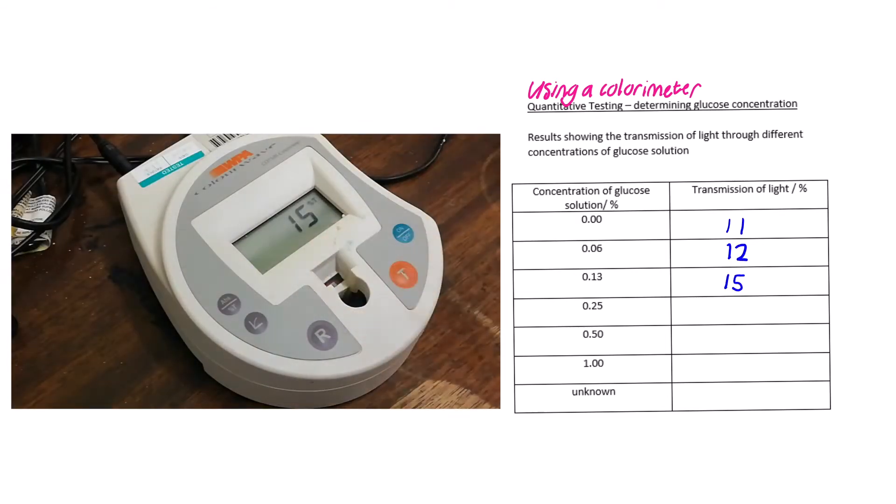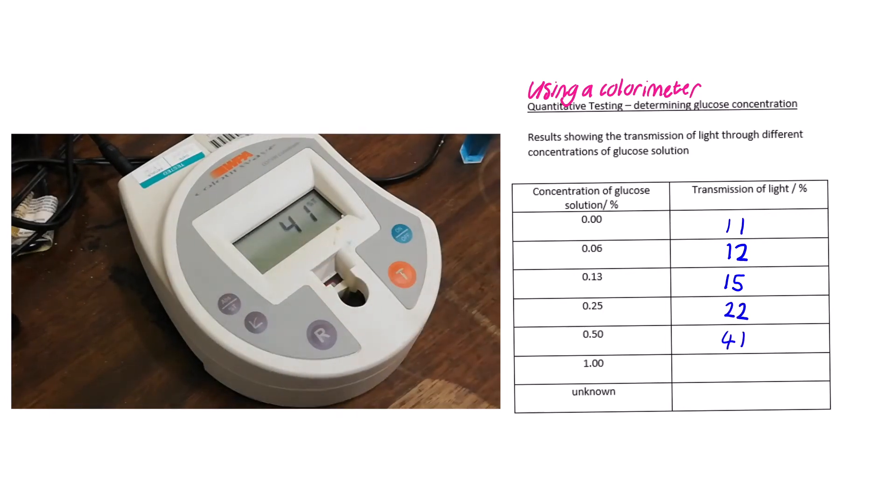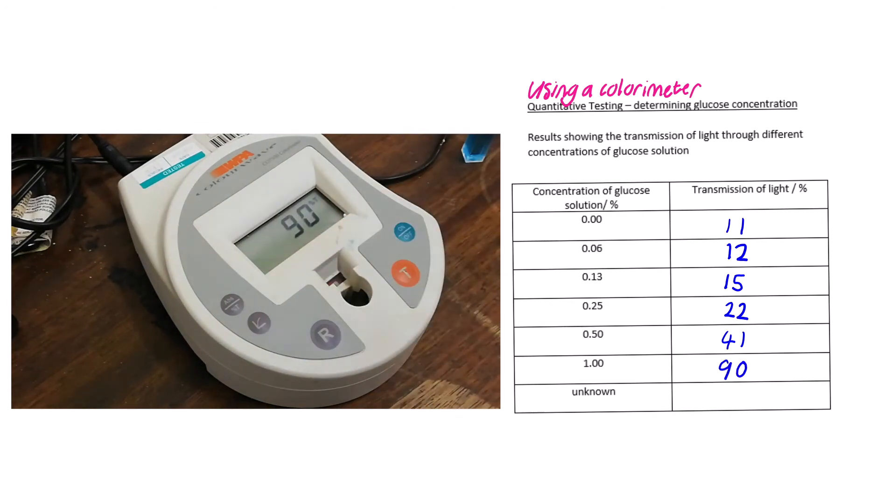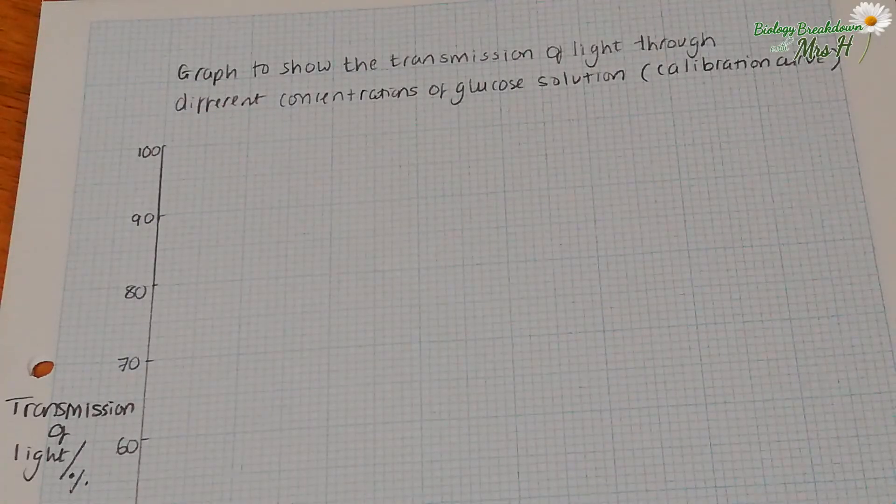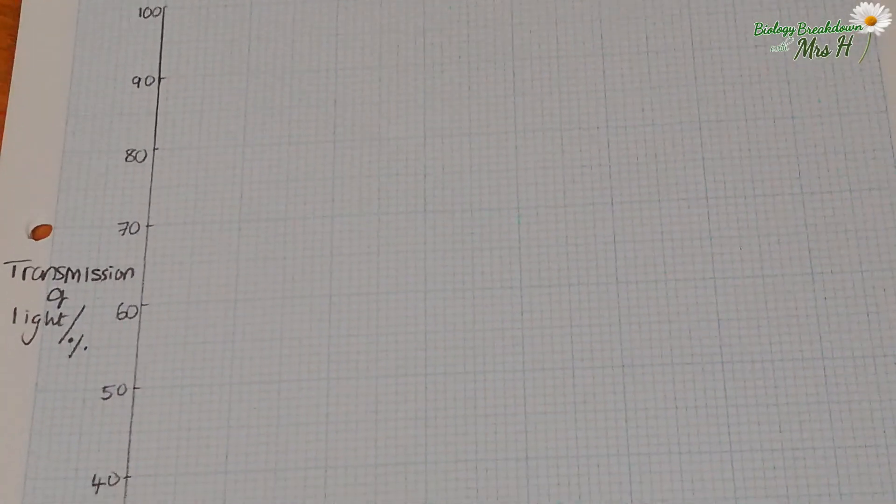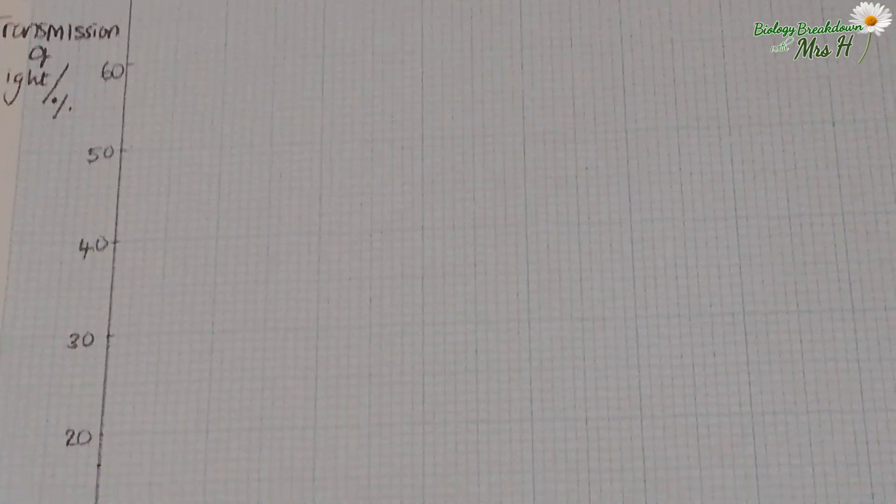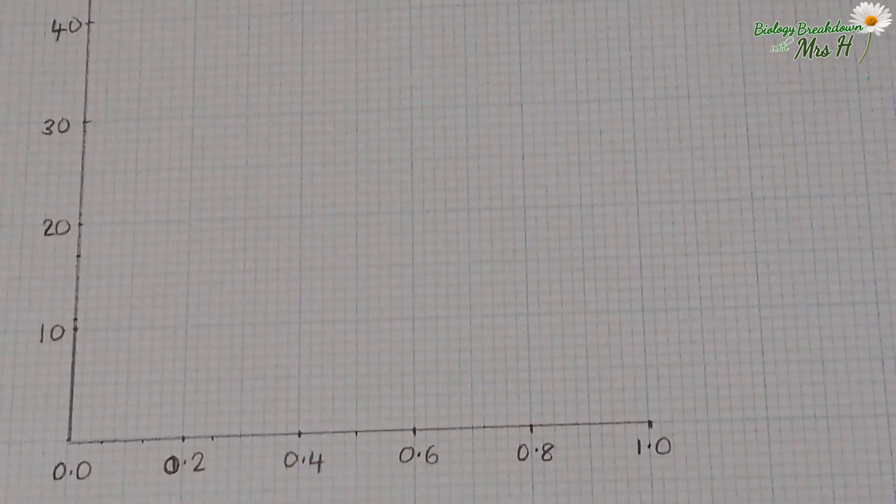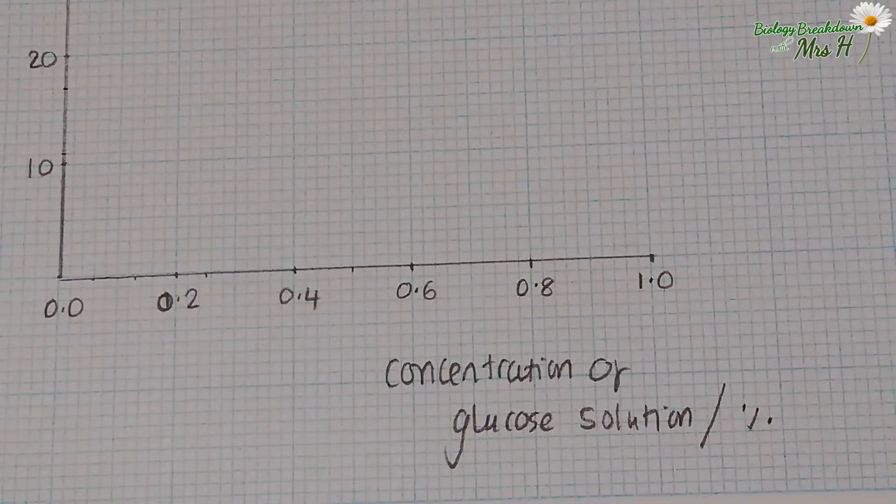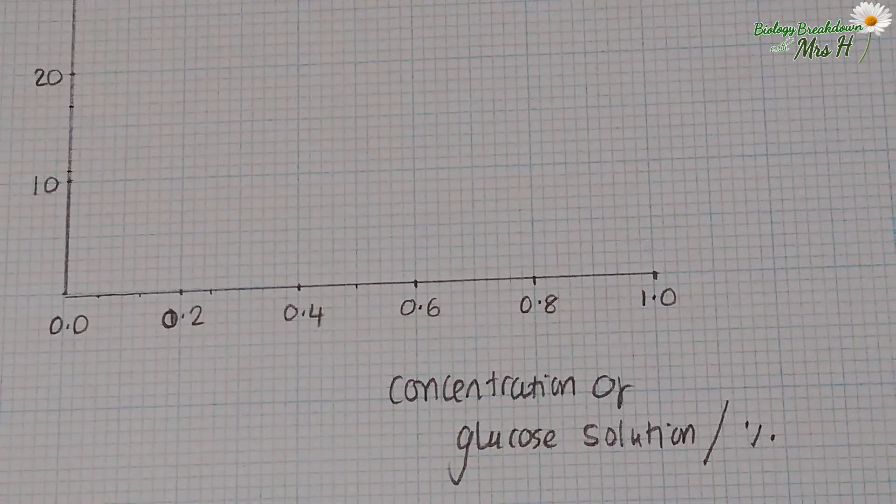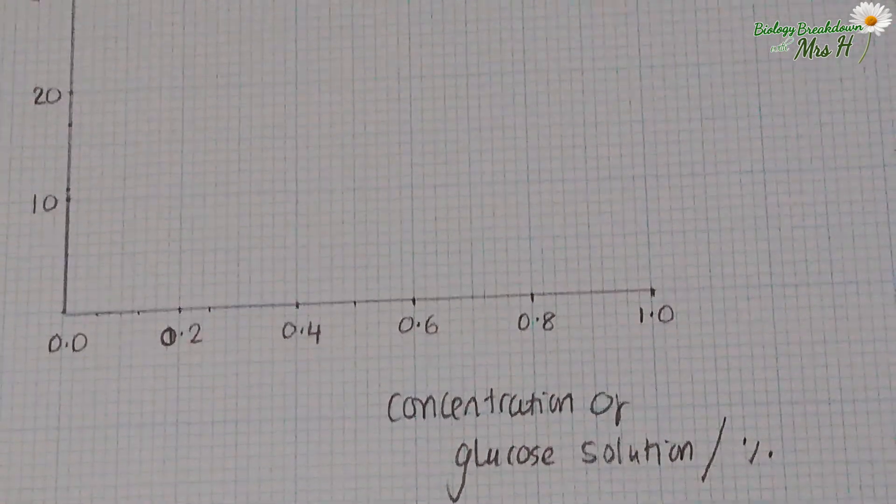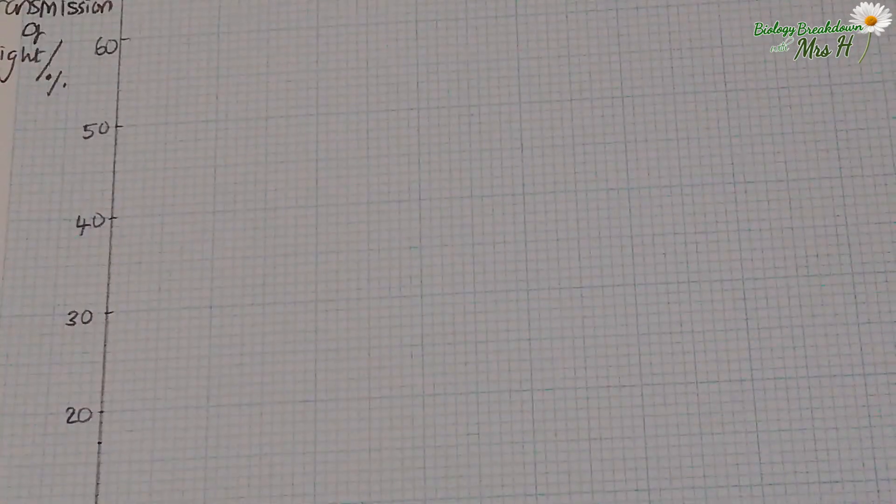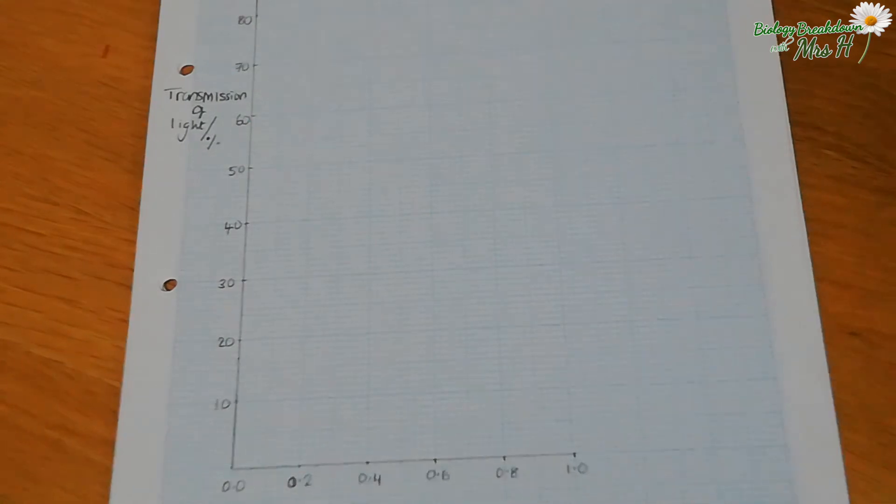Once you have your results, you need to plot a graph and a calibration curve. The independent variable must go on the x-axis. Keep the scale nice and simple. I've gone up in 0.2s every 10 squares, and the y-axis is from 0 to 100, again in a nice simple scale: 10 per 10 squares, so up in ones.